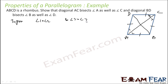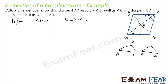We have to prove angle 1 is equal to angle 2 and angle 3 is equal to angle 4, given ABCD is a rhombus. Let me add point O. To prove the angles equal, if we can prove triangle DAC and triangle BAC are congruent, then the corresponding angles will be equal. AD equals BC — sides of rhombus. DC equals AB — sides of rhombus. AC equals AC — common side. So by SSS, they are congruent.